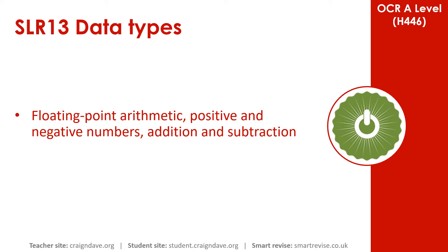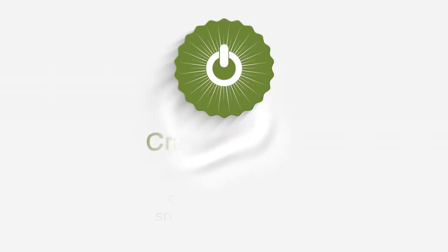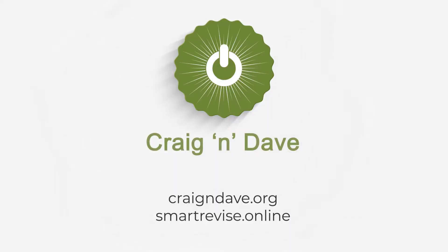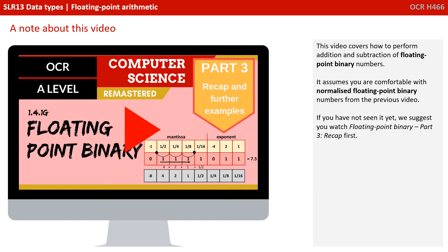In this video we go over floating point arithmetic using positive and negative numbers, addition and subtraction. This video covers how to perform addition and subtraction on floating point binary numbers. It assumes quite a lot of prior knowledge — you need to be comfortable with normalised floating point binary numbers from our previous videos. If you've not yet seen it, go back and watch that video first.